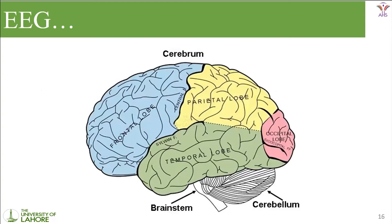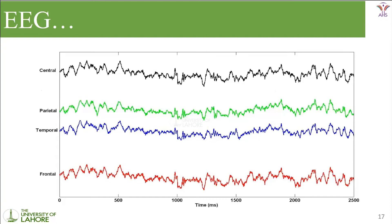Here is a picture of the brain showing the cerebrum, which consists of four lobes, then there is the cerebellum, and after that the brainstem. If I'm getting EEG only from the central part of the brain, that EEG waveform appears in black; if from the parietal lobe it appears in mustard; from the temporal lobe in blue; and from the frontal lobe in red. This graph is plotted with respect to time.